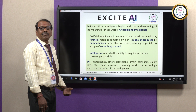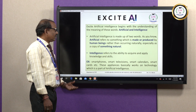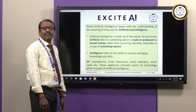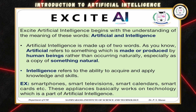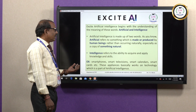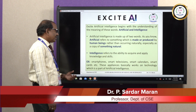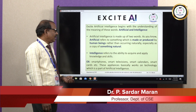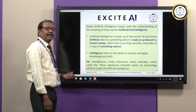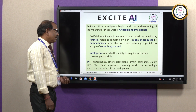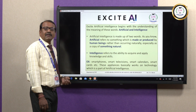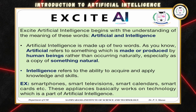What is the meaning of artificial intelligence? There are two words that make up AI. The first one is artificial and the second one is intelligence. The word artificial means rather than occurring naturally, especially a copy of something natural. Intelligence refers to the ability to acquire and apply knowledge and skills from human beings. These two words comprise and make artificial intelligence.